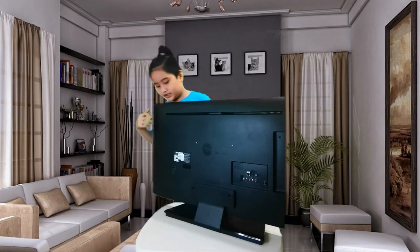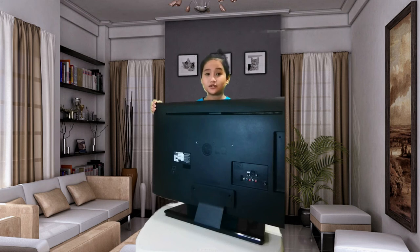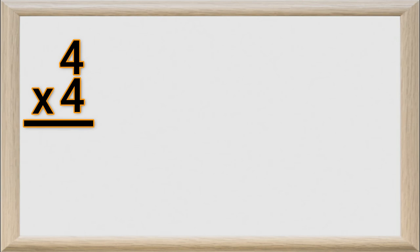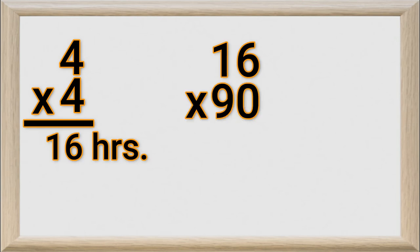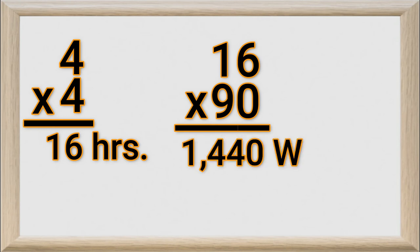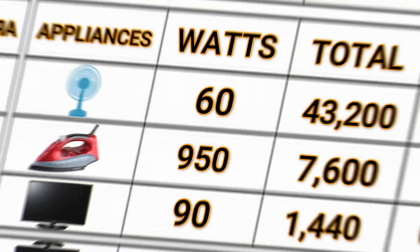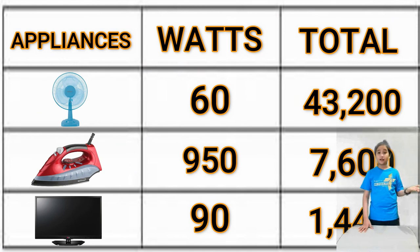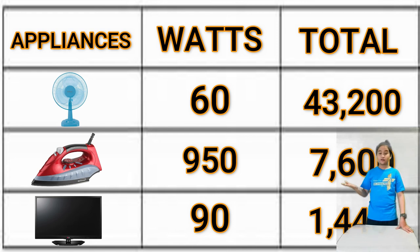This television indicates that it uses 90 watts per hour, but we rarely use this TV because we usually watch Netflix and YouTube on our mobile phones and laptops. We only use this TV during weekends for my little sister's online ballet class for 4 hours. So 4 hours multiplied by 4 weeks equals 16 hours, multiplied by 90 watts, giving 1,440 watts or 1.44 kilowatts per month. Although the flat iron requires 15 times more electricity to operate compared to the fan, the fan consumes more electricity since it runs 24/7, compared to the other two which are rarely used.